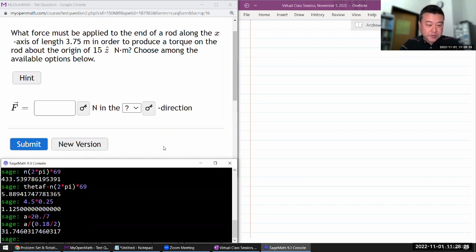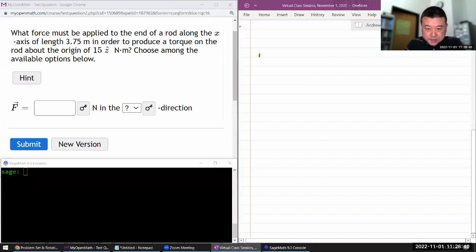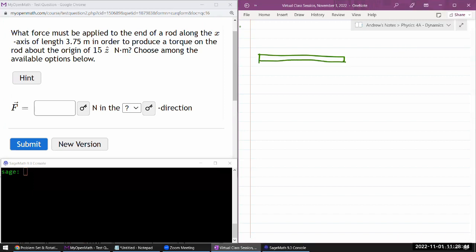So this is the first of those questions that I want you to do with cross-product, or do as an illustration of cross-product. So it asks, what force must be applied to end of a rod? Let me just draw the rod. I got some rod along the x-axis. So that was my x, so this is going to be my y-axis.